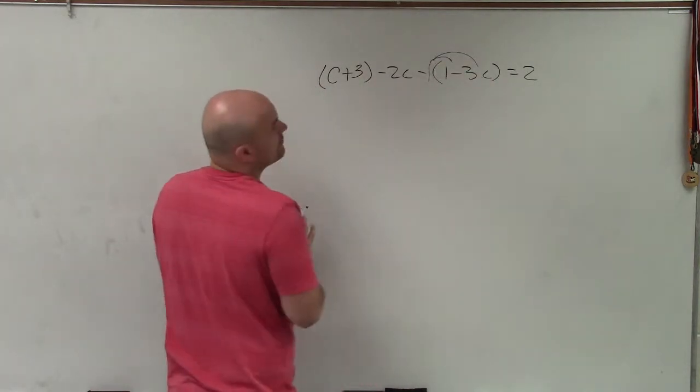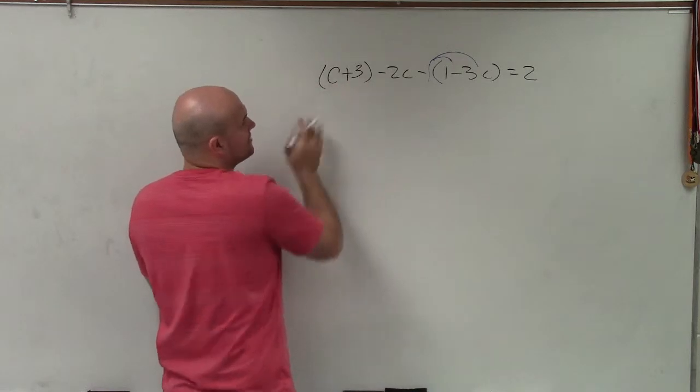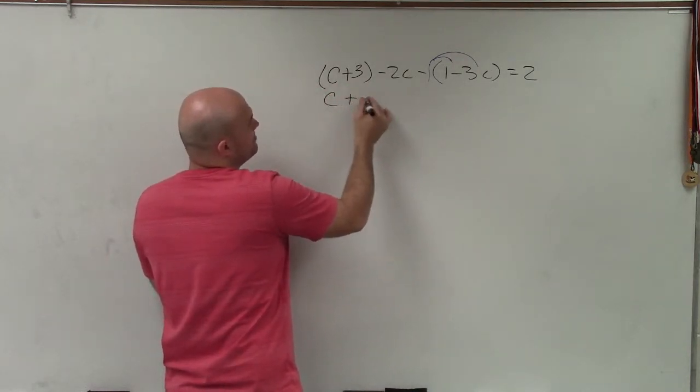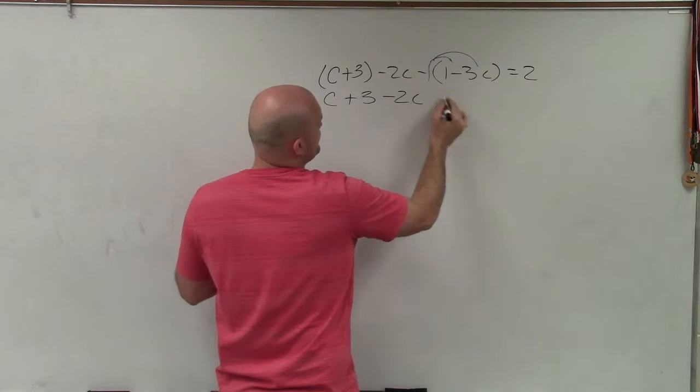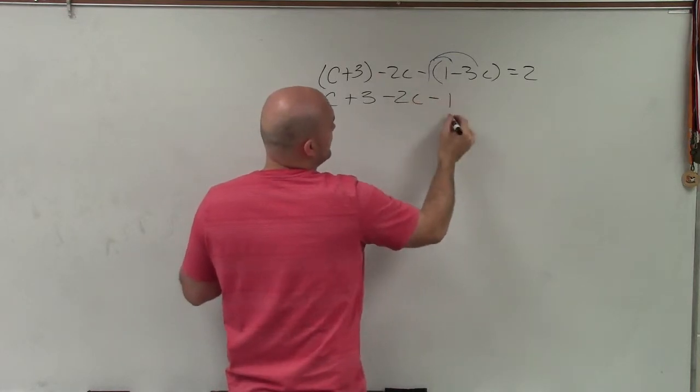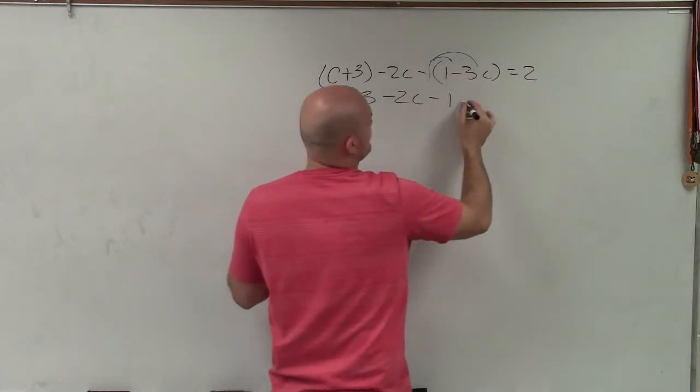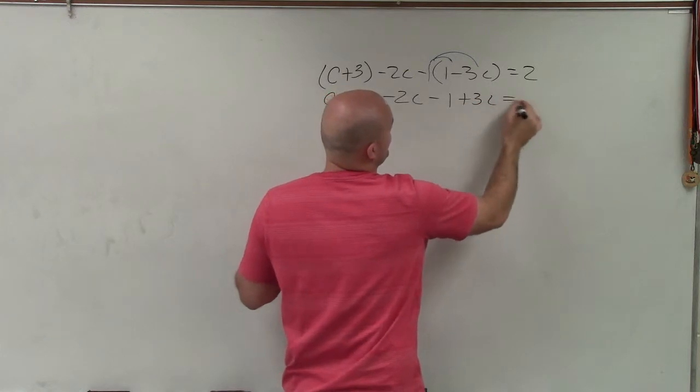I can just rewrite now this left side without the c plus 3 in parentheses so I'll just write c plus 3 minus 2c. Negative 1 times 1 is negative 1, negative 1 times negative 3c is a positive 3c equals 2.